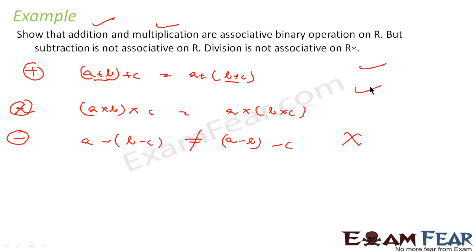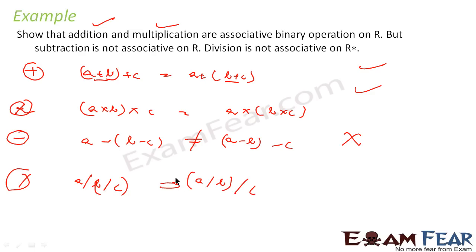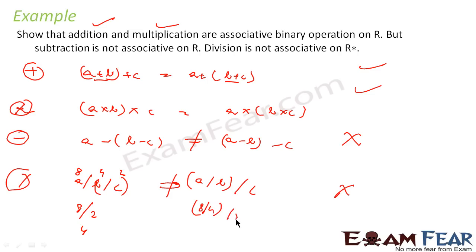For division also, (A÷B)÷C and A÷(B÷C) are different, so division is also not associative. For example, take A=8, B=4, C=2. Then (8÷4)÷2 = 2÷2 = 1, but 8÷(4÷2) = 8÷2 = 4. Both are different.